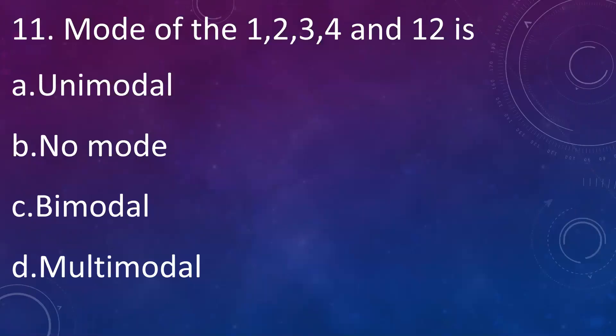For the given numbers 1, 2, 3, 4, and 12: A: unimodal, B: no mode, C: bimodal, D: multimodal. Answer is B: no mode. The definition of mode is the highest number repeated in the given data. Here, no number is repeated, so for this given data there is no mode.